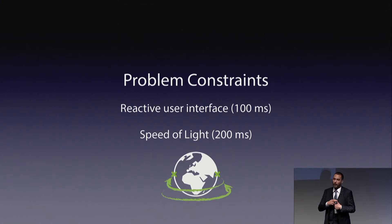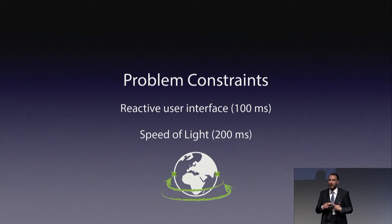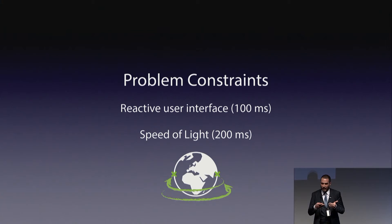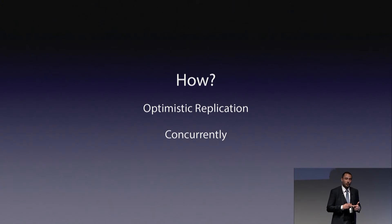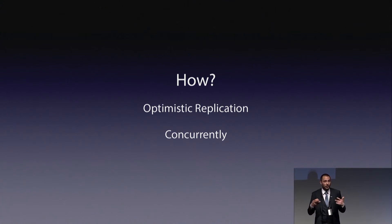So we want a reactive UI in 100 milliseconds or less, but the round-trip time for information can take something like 200 milliseconds. This problem is not new, and a well-known solution is optimistic replication — and we want this to happen concurrently.